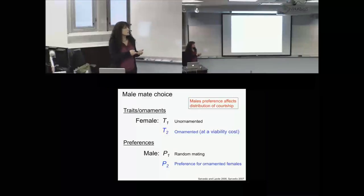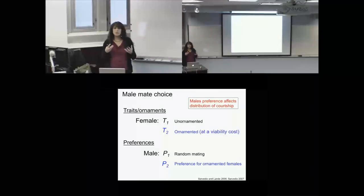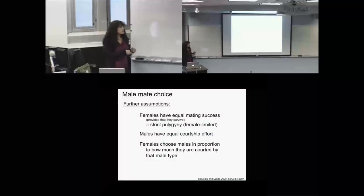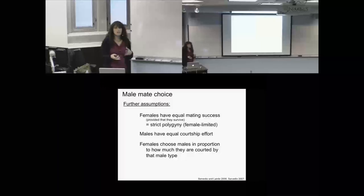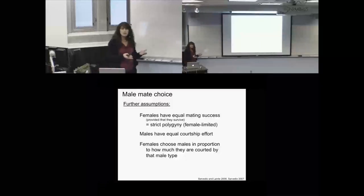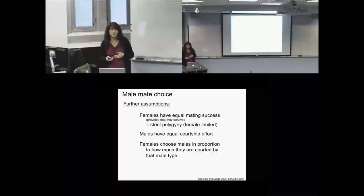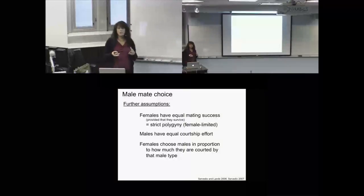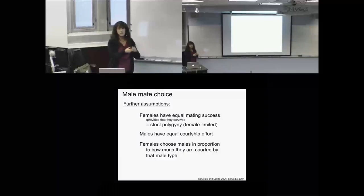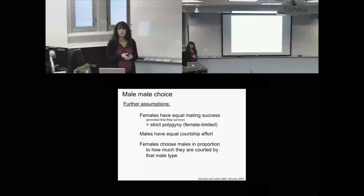Males express this preference by courting females differentially — the male preference affects the distribution of courtship given to females. The key additional assumptions: females have equal mating success provided they survive, males have equal total courtship effort regardless of whether they have a preference, and females choose males in proportion to how much they're courted by that male type. If a female is courted twice as much by a certain type of male, she's twice as likely to mate with him.